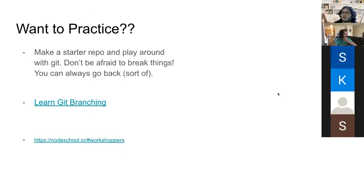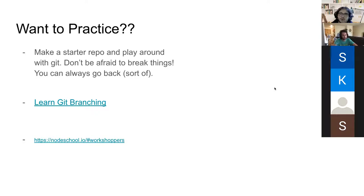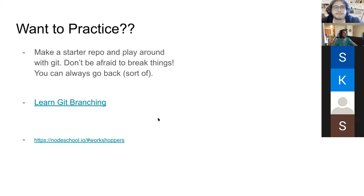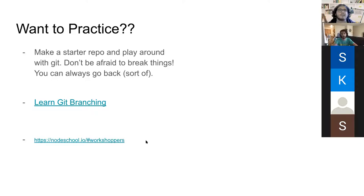This is our last slide. If you want to practice, make an example repo on your own GitHub and play around with it. Don't focus too much on the code — what you want to do is get comfortable with Git and everything it has to offer. Don't be afraid to break things; you can always go back in 99% of cases. There are two links we're going to post on CS Tutoring. They're interactive games that can help you develop your Git and other skills. Node School has modules on Git, Bash, around 30 on JavaScript, regular expressions, and functional programming.